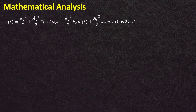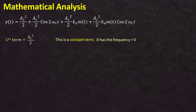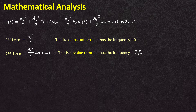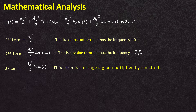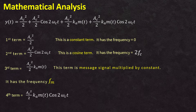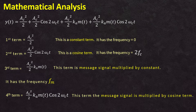The first term, Ac²/2, is a constant with frequency equal to 0. The second term, (Ac²/2)·cos(2ωc·t), is a cosine term with frequency equal to 2fc. The third term, (Ac²/2)·ka·m(t), is the message signal multiplied by the constant Ac²/2 and has frequency fm. The fourth term, (Ac²/2)·ka·m(t)·cos(2ωc·t), is the message signal multiplied by a cosine term and has frequency 2fc ± fm.